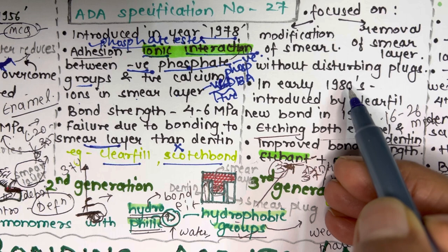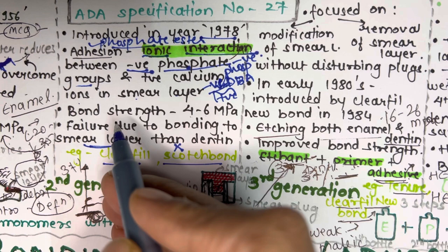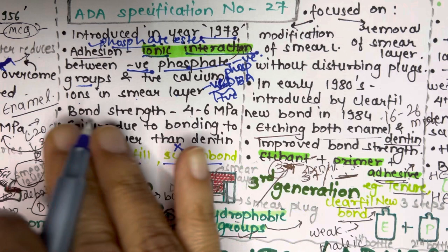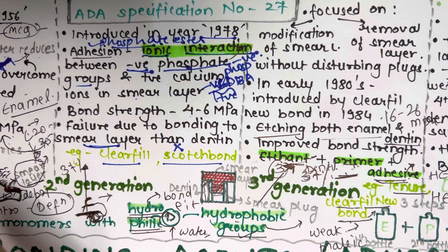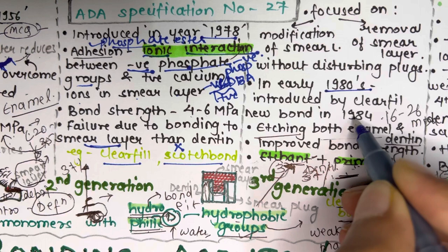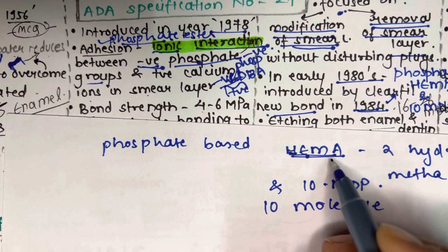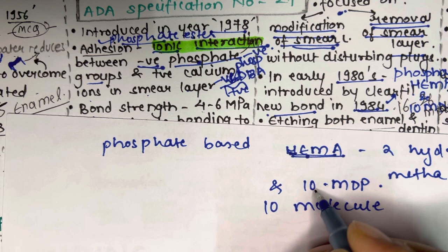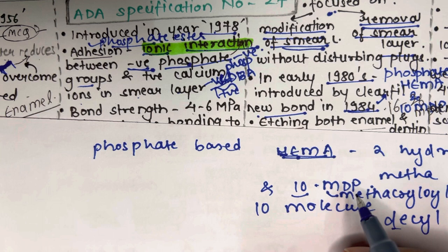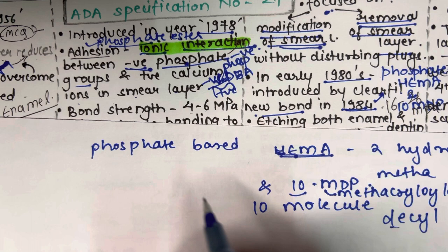In the first and second generation, the adhesion was with the smear layer, which caused failure and very low bond strength. To overcome this problem, the third generation was introduced in 1984 by a company called Clearfil New Bond. This third generation is a phosphate-based material which contains HEMA — that stands for 2-hydroxyethyl methacrylate — and 10-MDP, which stands for 10-methacryloyloxydecyl dihydrogen phosphate.